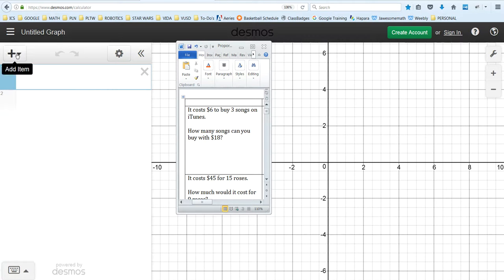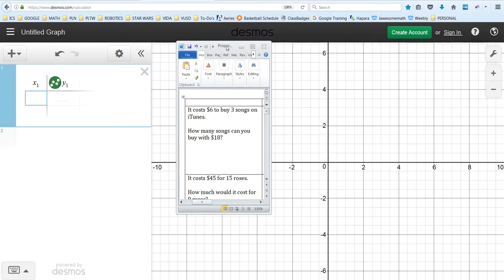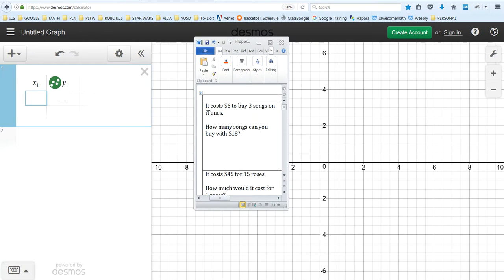I want to make a table, and I need to choose which one is the X and which one is the Y. Most of the time it doesn't matter, but in this case I want songs to be my X and dollars to be my Y.